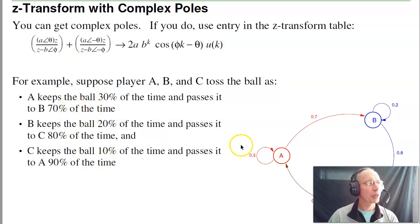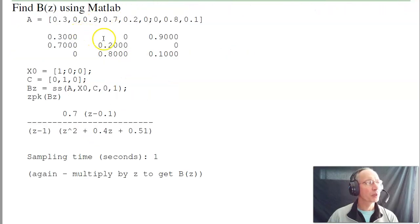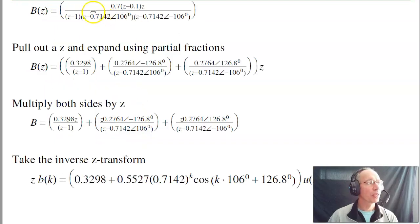For example, if I change the problem so I have this ring system, come up with a corresponding A matrix, initial condition, find the probability that B has the ball. Repeat what we did before: input A, initial condition C, input into state space, find the zeros and poles. I now have complex poles here. Multiply by Z, just like we did before. Here's the Z transform at the output. Do partial fraction expansion, and I get complex numerators. That's not a problem. Multiply through by Z, this is going to be twice the amplitude: 2 times 0.7 is 0.55 times 0.71 to the K, cosine of 106 degrees K, shifted by plus 126 degrees. That's B of K.